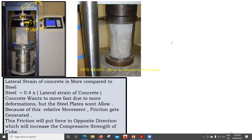The concrete wants to move faster — expand by 10 mm — whereas the steel only wants to move 5 mm in the x direction. So in the competition between the concrete and the steel, the concrete wants to go faster but the steel will not allow it. Due to this relative movement, friction is generated between the steel plate and the concrete, and this friction puts a force in the opposite direction.